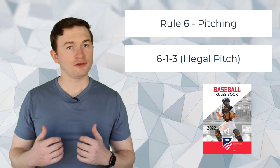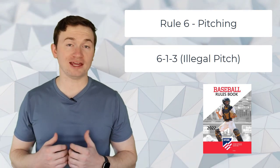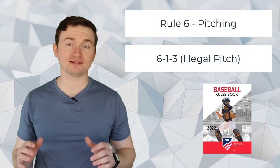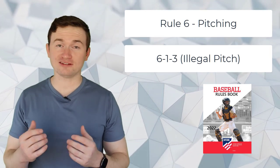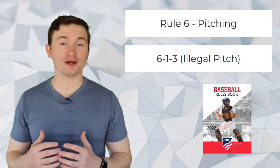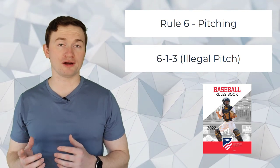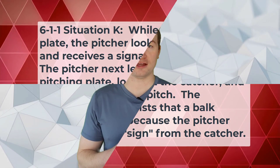Now, the penalty for this falls under delivering an illegal pitch under rule 6-1-3. The penalty for an illegal pitch is that if there are no runners on base, one ball will be added to the count. If there is a runner on base, then we're going to call a balk and award the runners one base, but the count will stay the same. Now, to accompany this change, the NFHS added only one additional situation to the casebook.